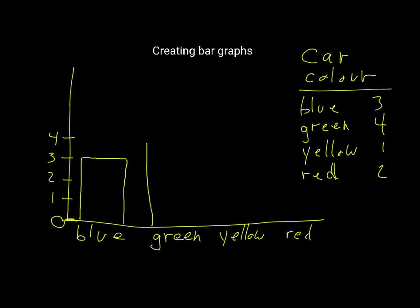I need to make sure that the width of each bar is the same. I don't have a ruler and I'm not using squared paper so I'm just doing the best I can freehand. Then yellow has one, so one — it's about there.